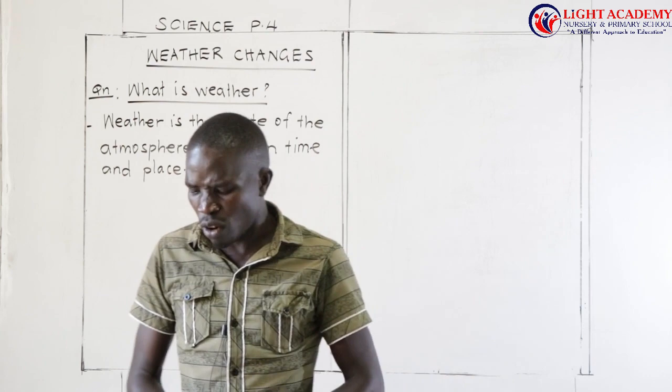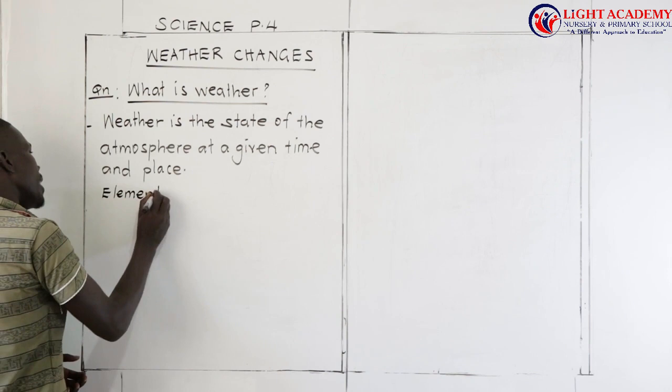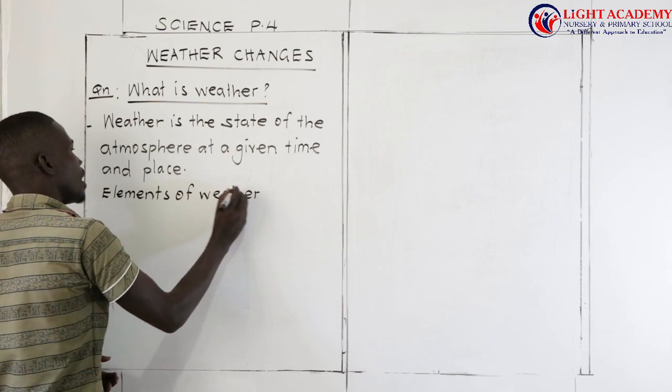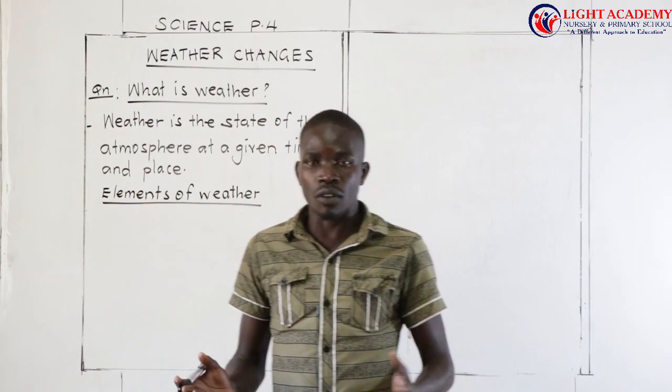From there, we can look at the factors of weather. We call them factors or elements of weather. The elements of weather are the ones that bring the conditions or the types of weather.